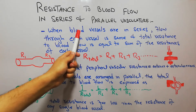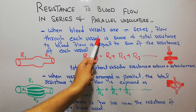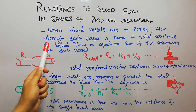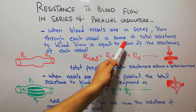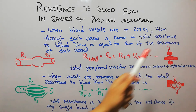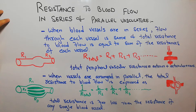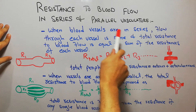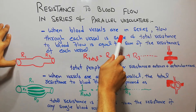When blood vessels are in series, flow through each vessel is the same, and the total resistance to blood flow is equal to the sum of the resistances of each vessel. It clearly states that the blood flow through each vessel is the same.